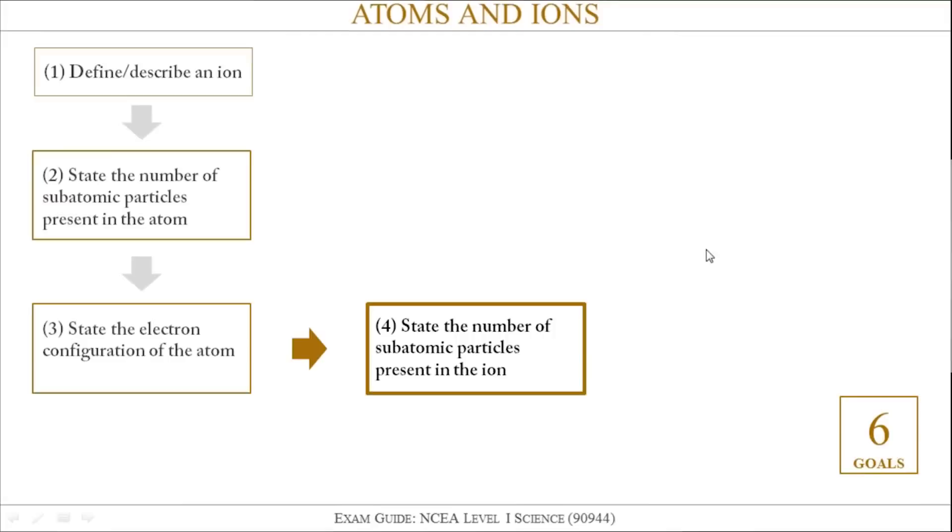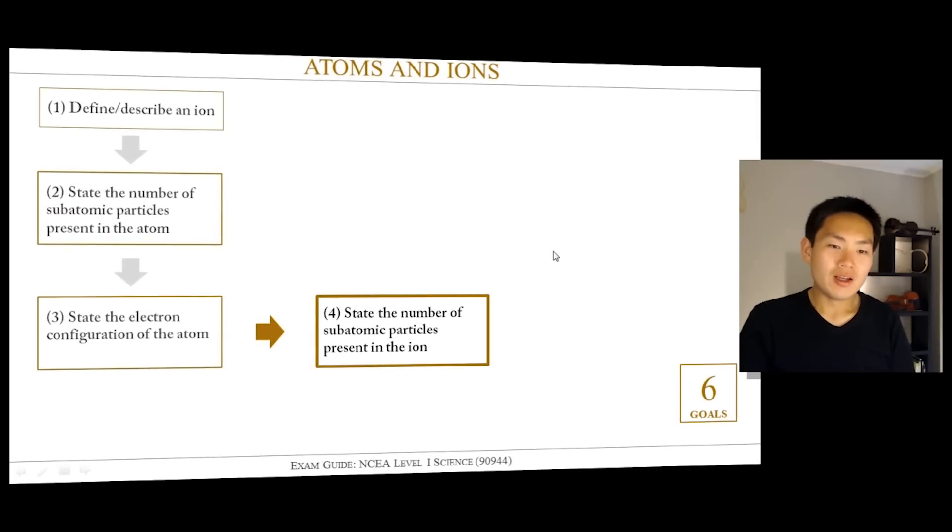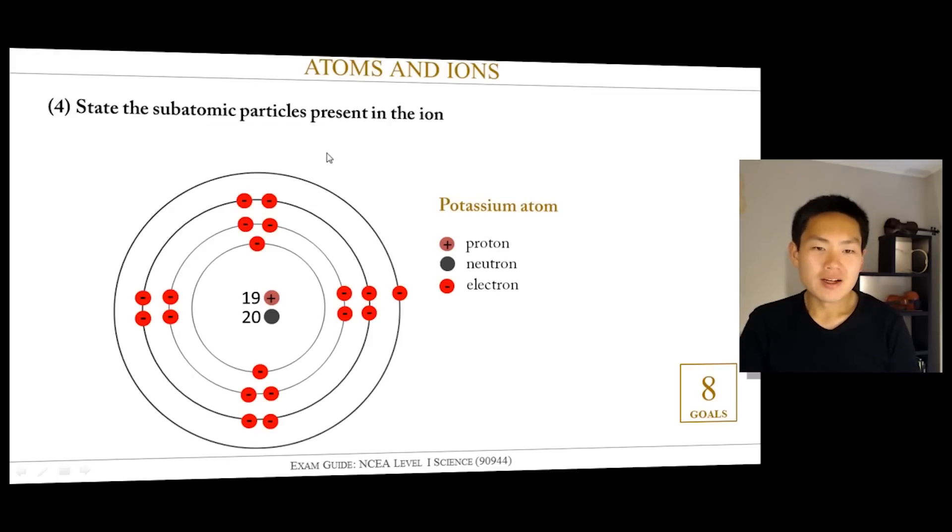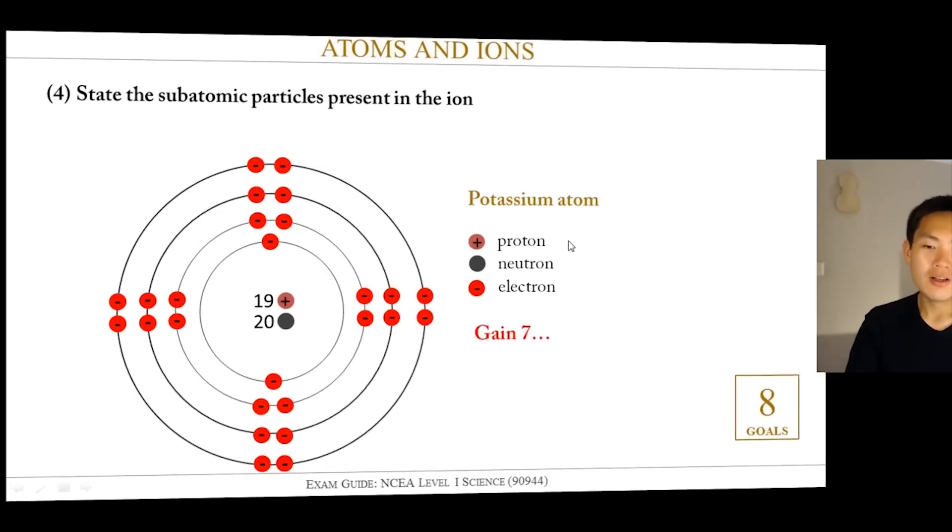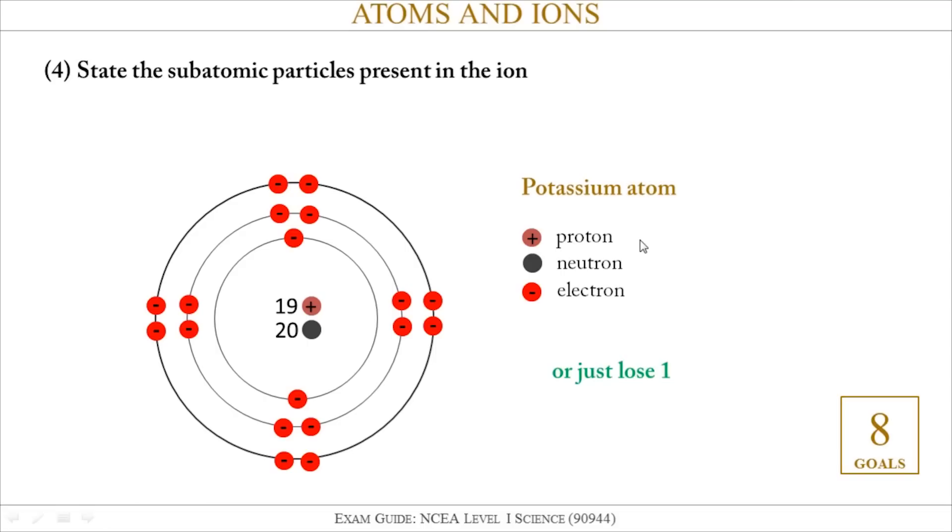Next thing I'll do is pretty much rinse and repeat steps two and three except this time for the ion. So this time I've got: state the subatomic particles present in the ion. Just to recap from the previous step, I've got a diagram of the potassium atom and I can either choose to gain seven electrons to form a full outer shell or I could choose to just lose one electron to form a full outer shell. It's going to be much easier for potassium to lose just one electron. We're going to have the diagram as shown where it's just losing one electron and we have to update our diagram and call it the potassium ion.